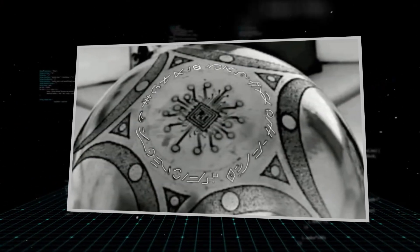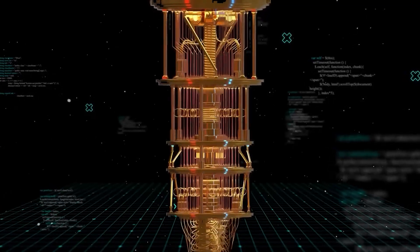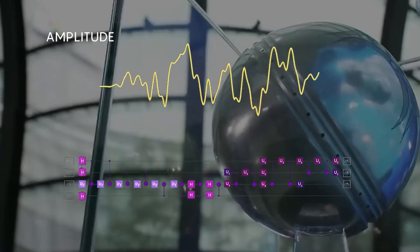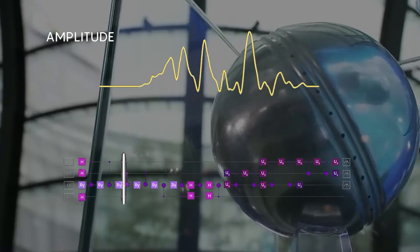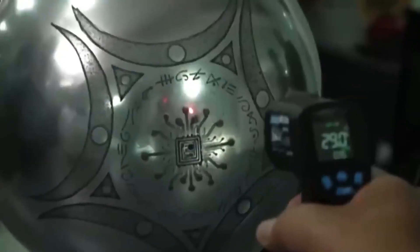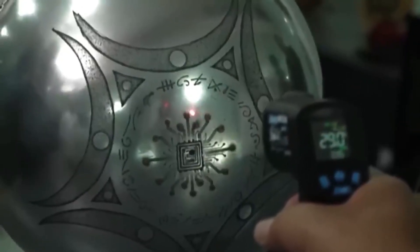The mathematical architecture that makes reality work, compressed into symbols on a metal sphere. We build computers that process information. This sphere might just be information, pure math made physical. This wasn't technology anymore. This was approaching something else entirely.